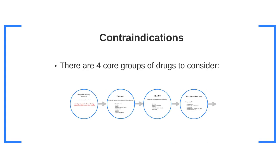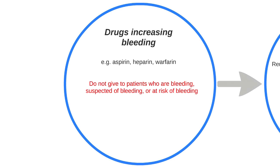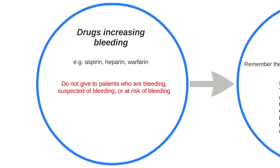Now C, the first of our bigger categories. C stands for contraindications, and you should always consider and review four important areas. The first of these are drugs that increase bleeding. Examples here would include aspirin, heparin and warfarin. It is important that in patients who are at risk of bleeding or who are actively bleeding, these agents are withheld.